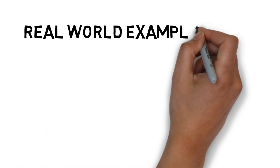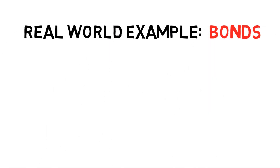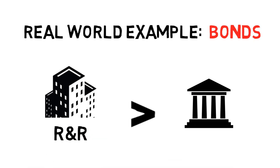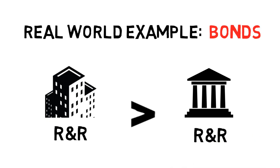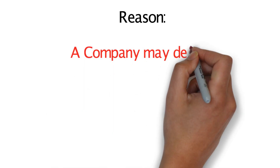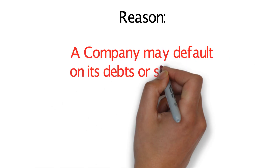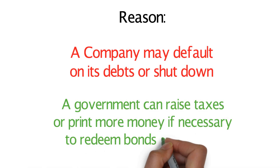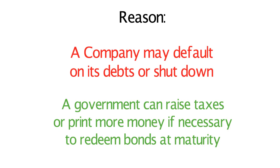Let's look at a real world example. A corporate bond has a higher risk and a higher potential return than a government bond. Why? A company may default on its loan or shut down. On the other hand, a government bond is issued by a country's government, and a government can raise taxes or print more money to redeem the bond at maturity. In general, a government's chances of defaulting on a loan or shutting down is almost impossible. A more in-depth lesson on bonds will be covered in a later video.